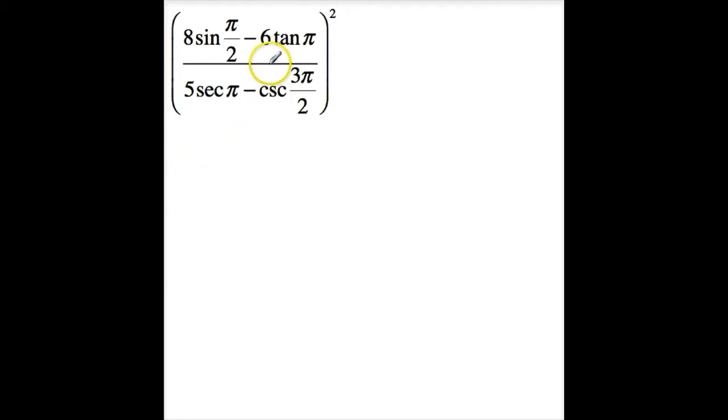So you need to know those key angles for doing problems like this. Suppose I wanted to find out what this is, and I don't have a calculator. This is going to be 8 times the sine of pi over 2 is 1, the tangent of pi is 0, 5. The secant of pi is negative 1, minus the cosecant of 3 pi over 2 is negative 1, and this whole thing is squared. So this becomes 8 divided by negative 4 squared, or just 4.